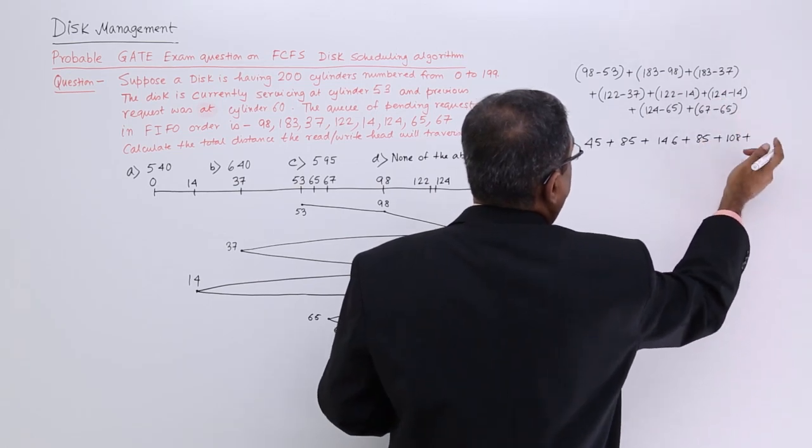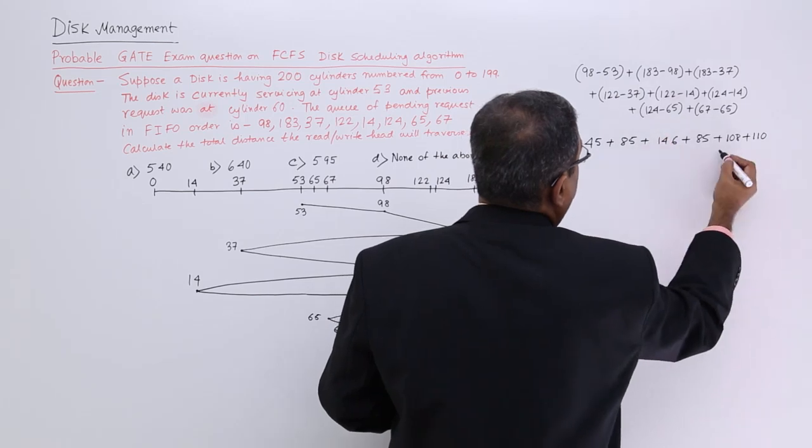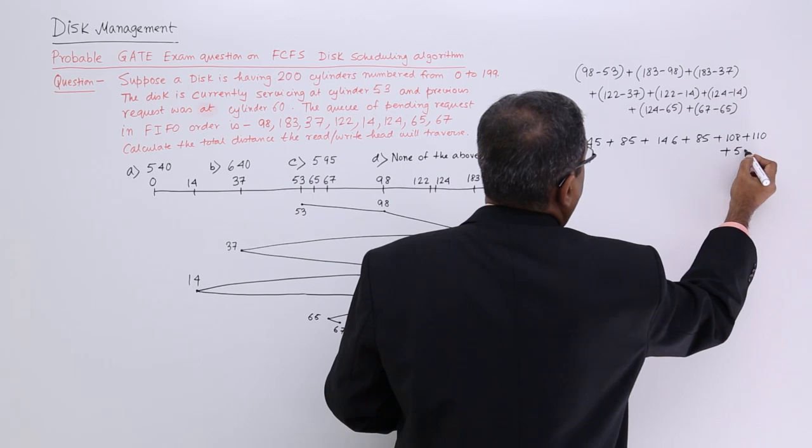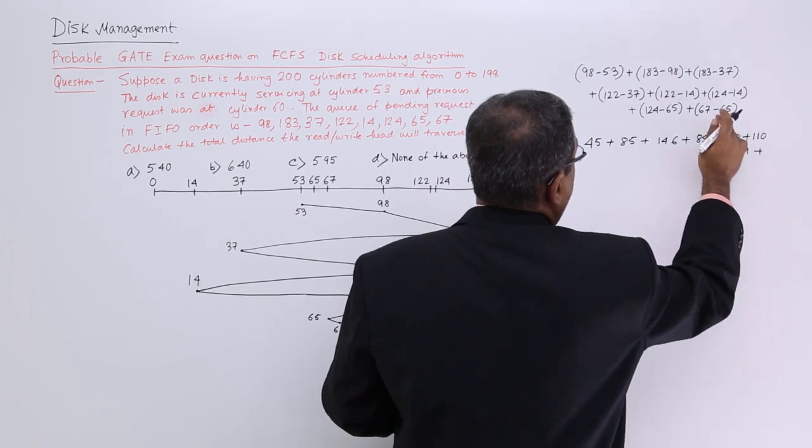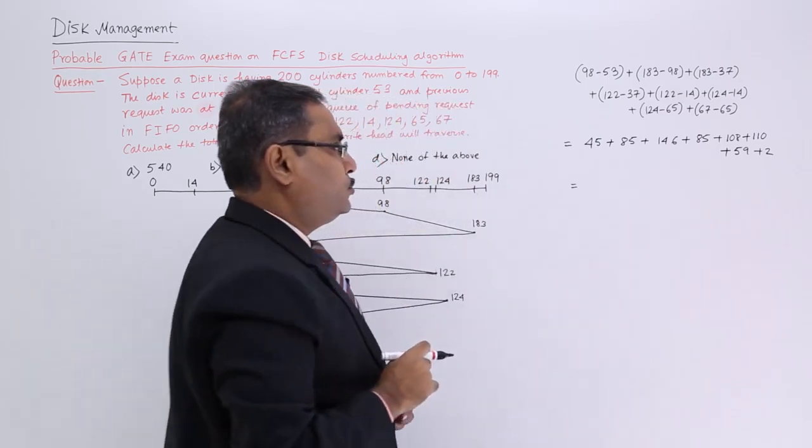So what about this one? It is 110, very simple. What about this one? This is 59. And what about the last one? It should be 2.